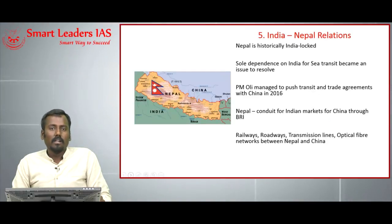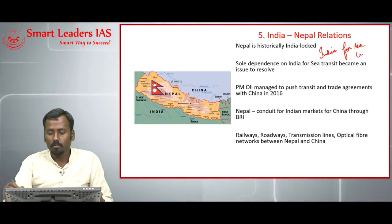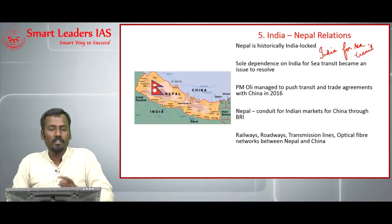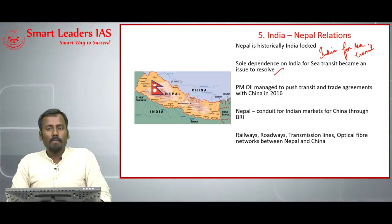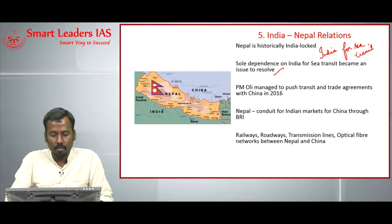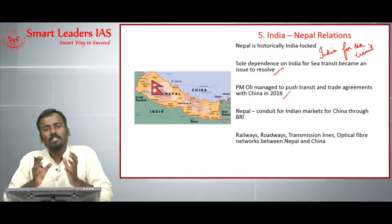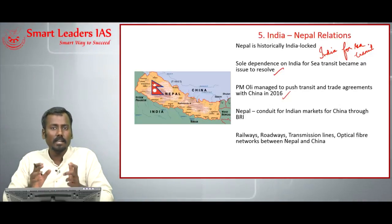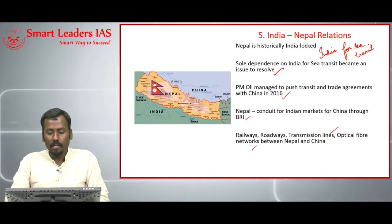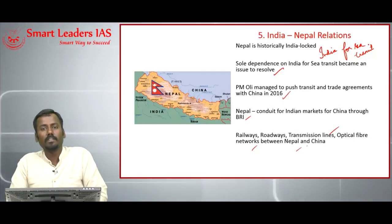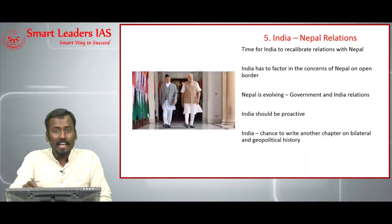Nepal is historically India-locked, meaning Nepal needs India for sea transit. However, any sovereign country does not want to depend on a single source for sea transit, so after 2016, Prime Minister Oli managed to push a transit and trade agreement with China. Apart from India, almost all South Asian countries are part of the Belt and Road Initiative. China views Nepal as a conduit to Indian markets and is helping construct railways, roadways, transmission lines, and optical fiber networks between Nepal and China.